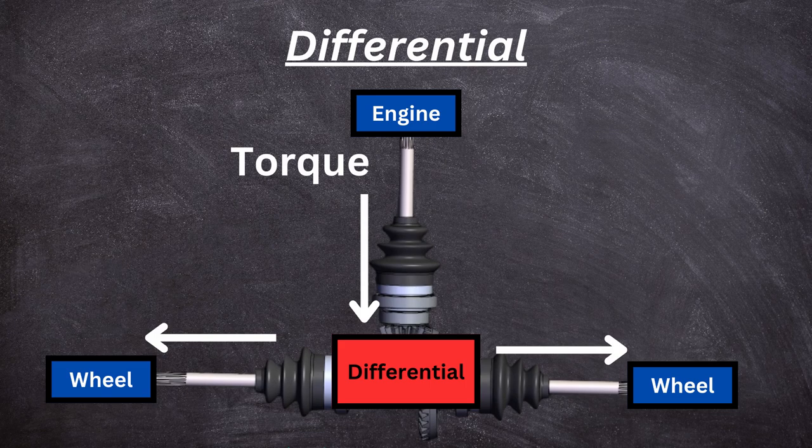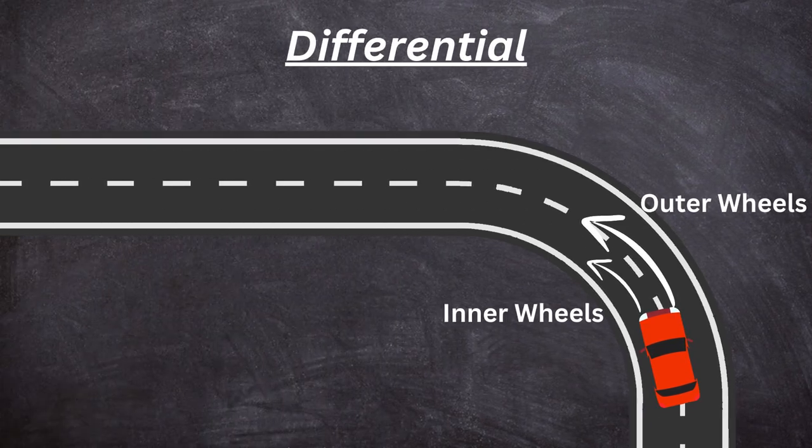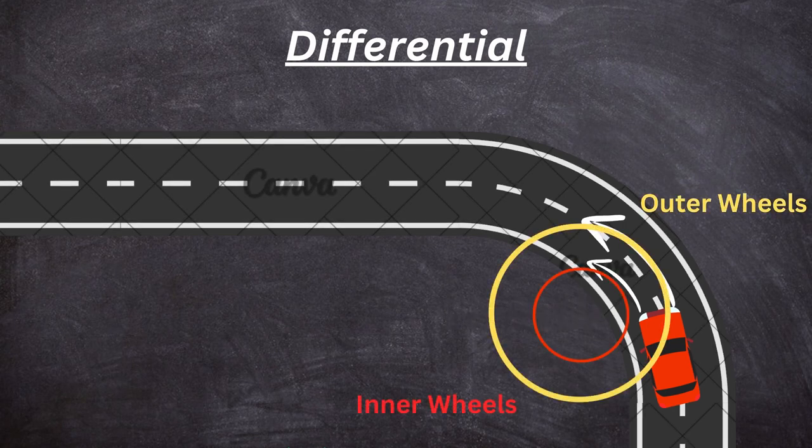What does a differential even do? When you're making a turn, the inner wheels have to travel at a lesser speed than the outer wheels in order to keep up. This makes sense considering the radius of the outer wheels is much larger than the radius of the inner wheels, so the inner wheels travel a smaller distance while the outer wheels travel a larger distance in the same time.